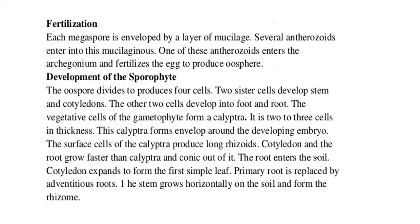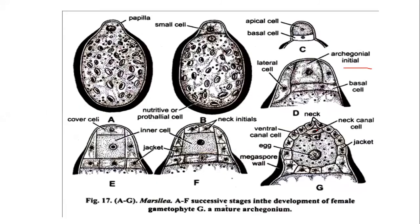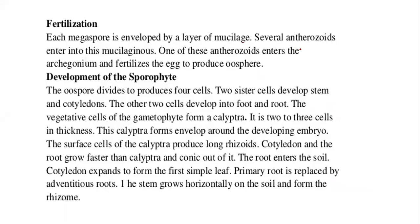At fertilization, each megaspore contains a well-developed oosphere or egg — the female gamete. At the time of fertilization, the neck canal cell and ventral canal cell both degenerate and produce a mucilaginous substance. With the help of this mucilage, the antherozoids liberated into the water from the male gametophyte are able to move, and one antherozoid enters into the archegonium, fuses with the egg, and produces the zygote or oospore.